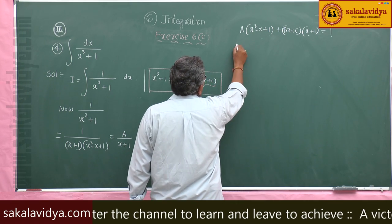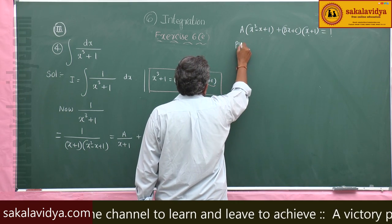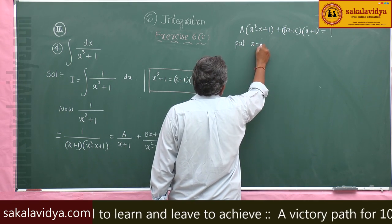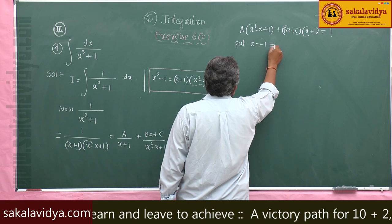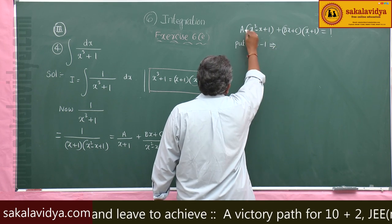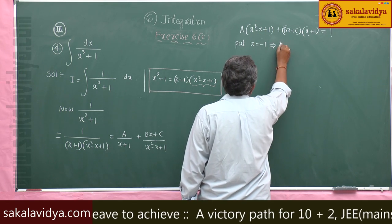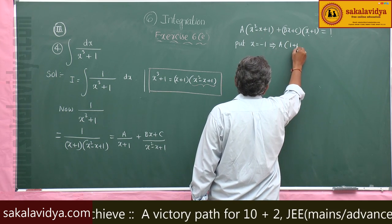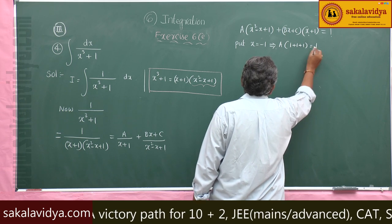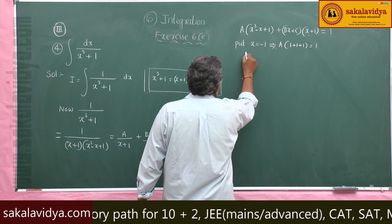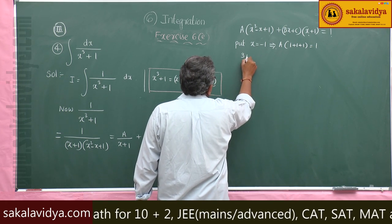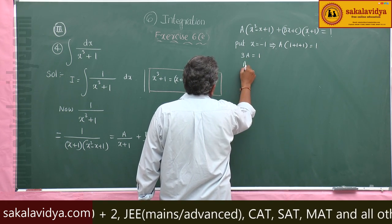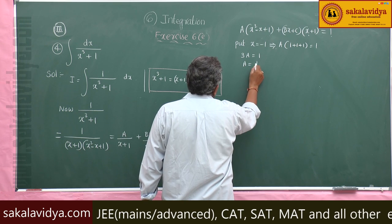Now put x equal to minus 1: A of 1 plus 1 plus 1 equals 1, so 3A equals 1, therefore A equals 1 by 3.